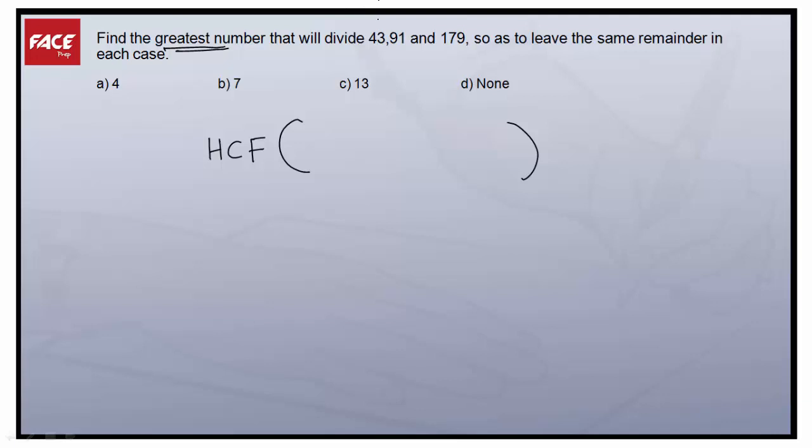The concept is: if they are asking find the greatest number that will divide a, b, c so as to leave the same remainder in each case, the answer will be HCF of a minus b, comma b minus c, comma c minus a.